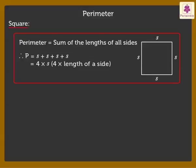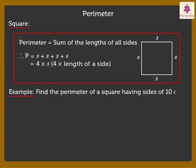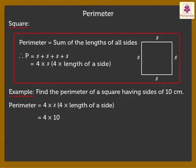Now, let us find the perimeter of a square having sides of 10 centimeters. Using the formula, perimeter of the square is equal to 4 into 10, which is equal to 40 centimeters. Thus, the perimeter of the square is 40 centimeters.